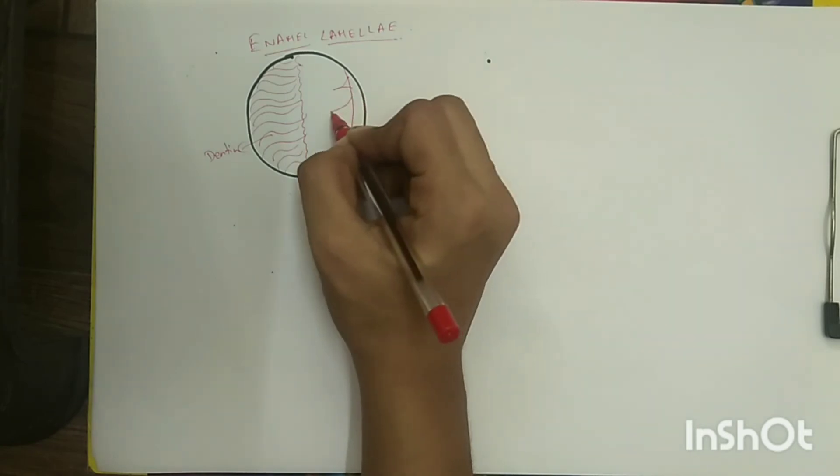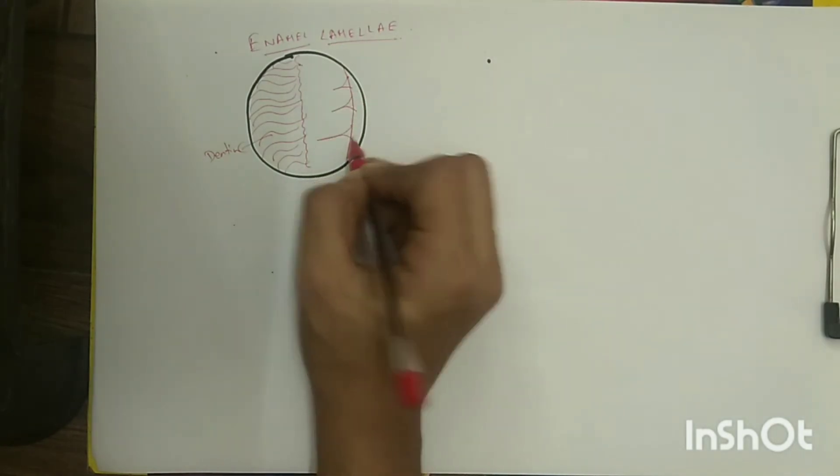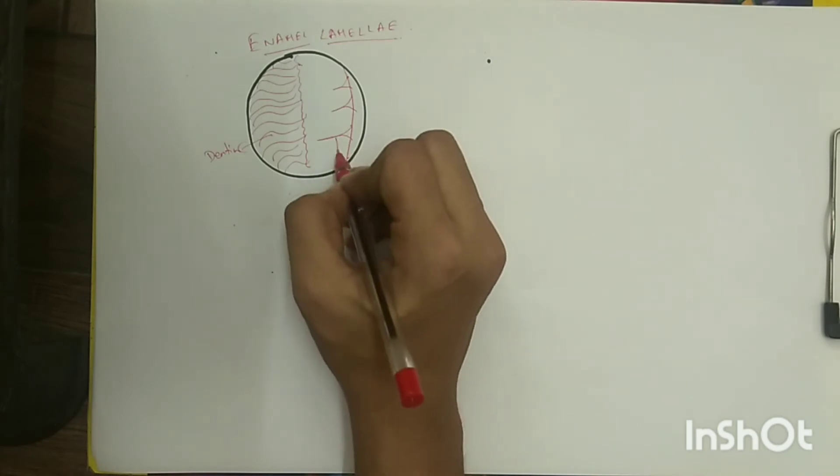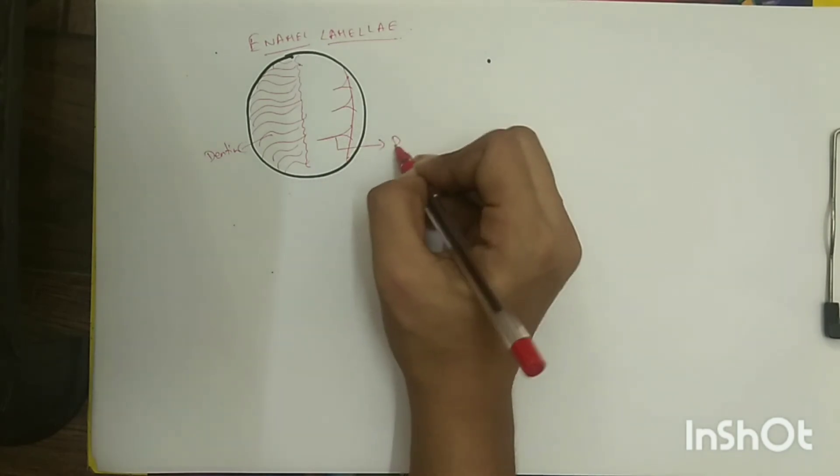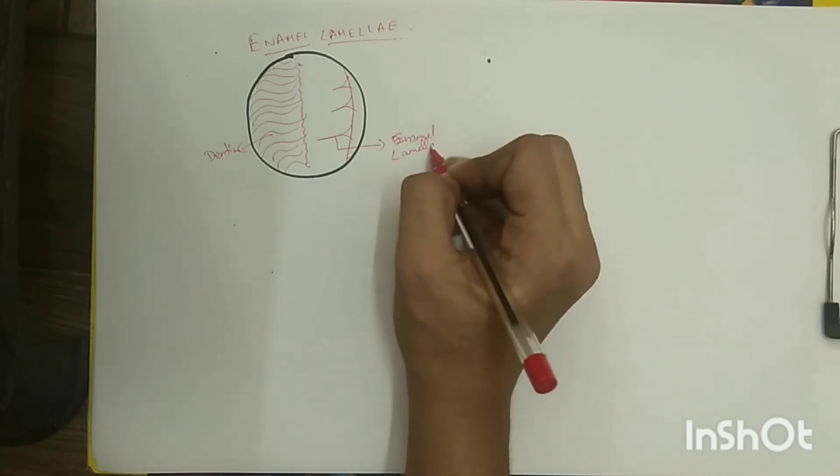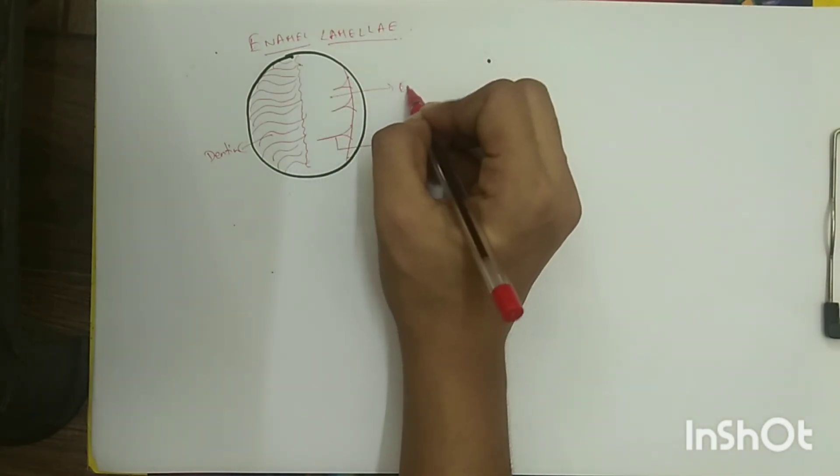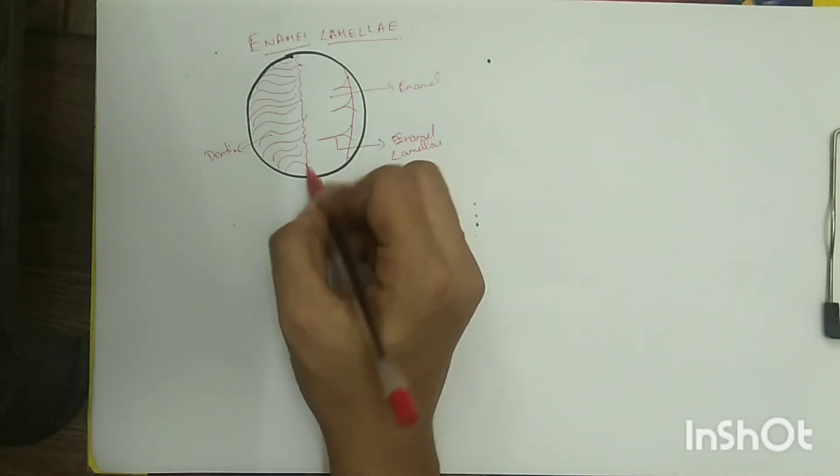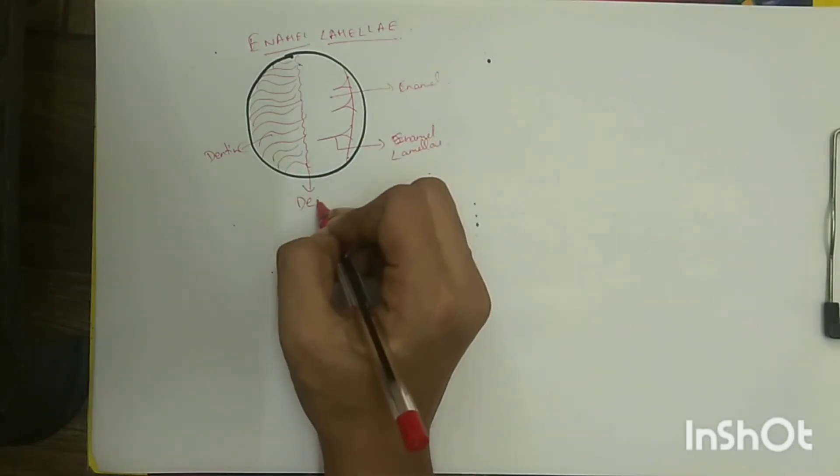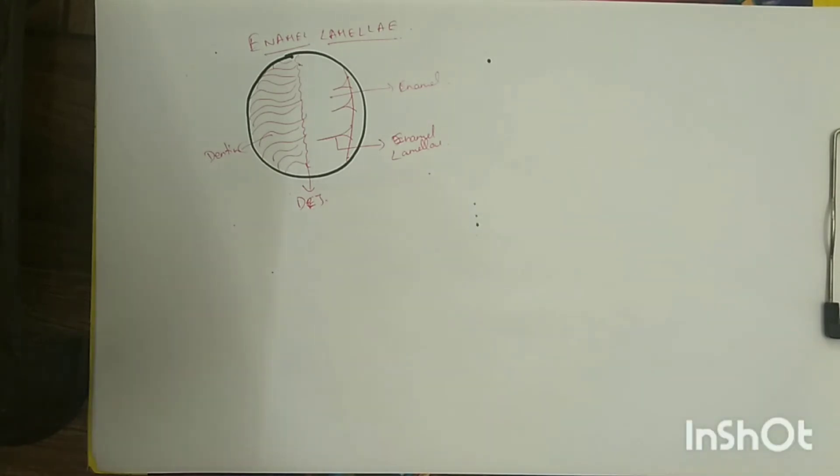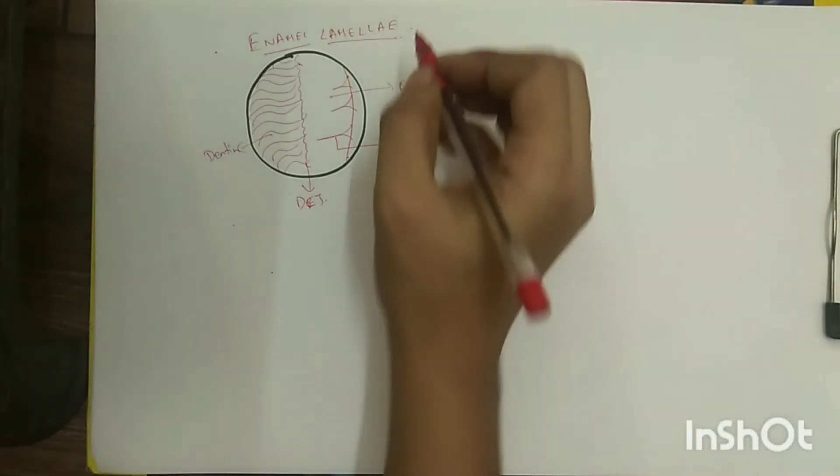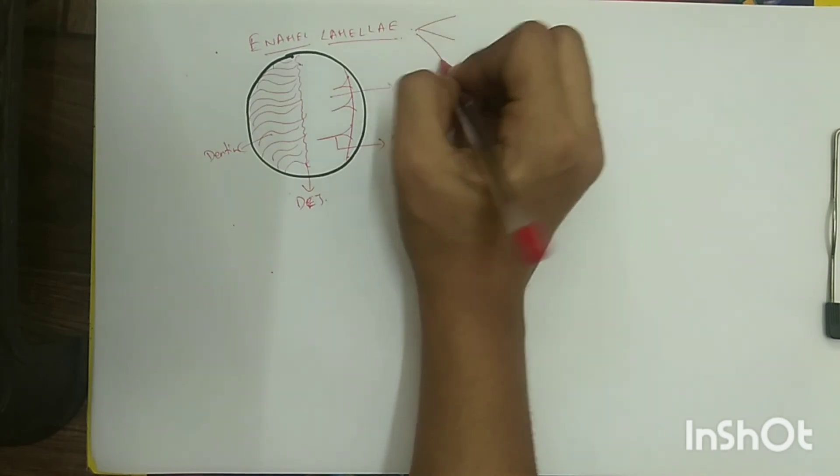Enamel lamellae can be differentiated into three types: type A, type B, and type C. Type A enamel lamellae are poorly calcified rod segments that occur when a section of enamel rods fail to calcify when occlusal forces are applied. Type B contains degenerated cells only and are defects in enamel filled with organic material.